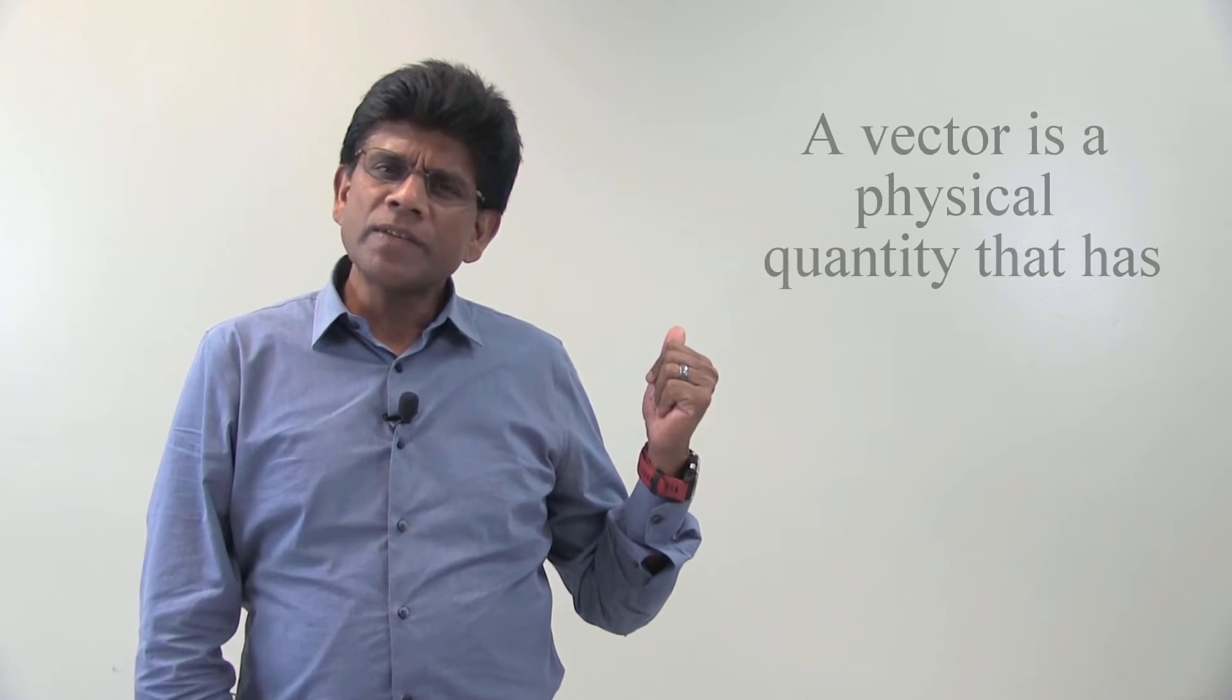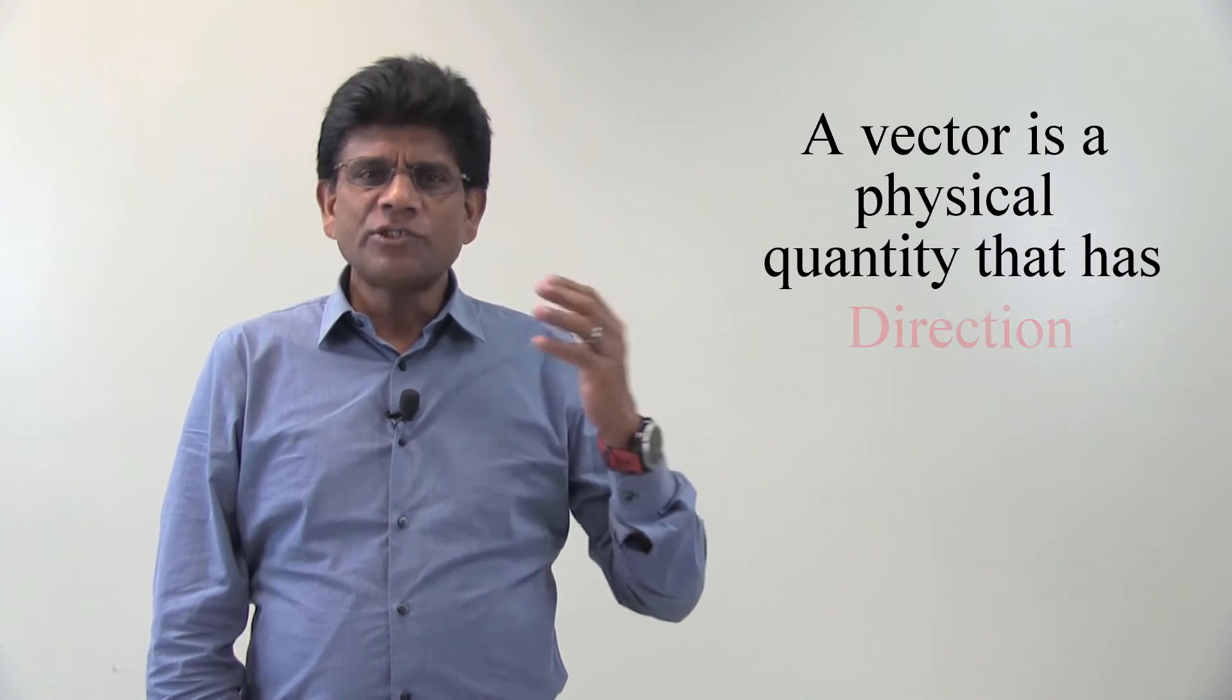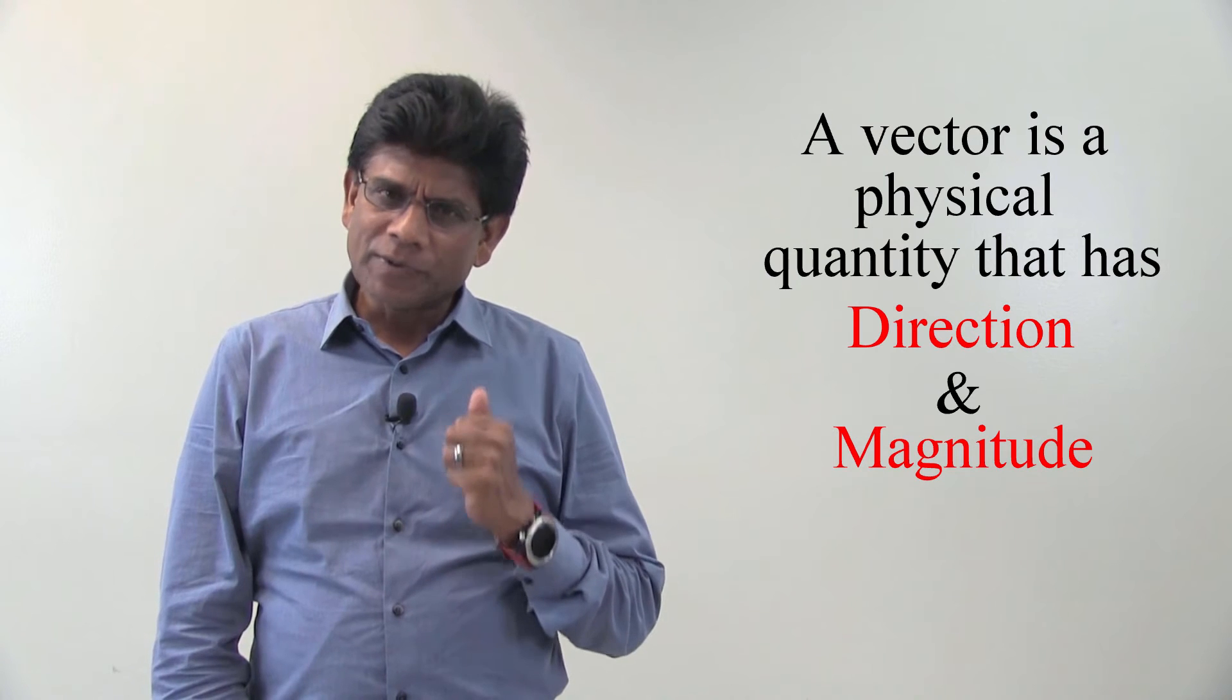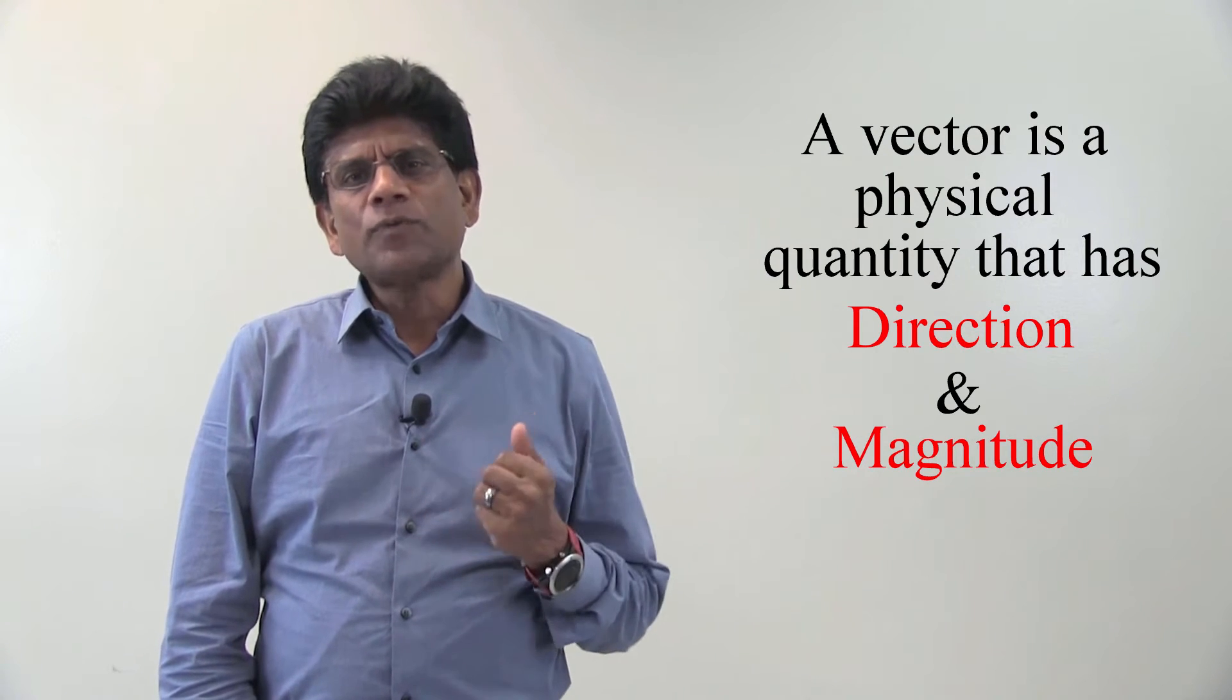A typical definition of a vector is stated as follows. A vector is a physical quantity that has direction and magnitude. This statement is kind of abstract and can be confusing for many students.